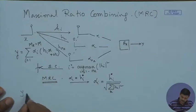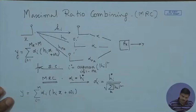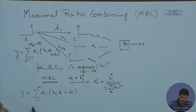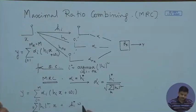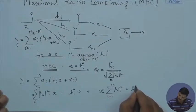The received signal Y equals the sum from i equals 1 to M of alpha_i H_i X plus W_i, where W_i is additive white Gaussian noise and H_i is the Rayleigh faded channel coefficient. Since alpha_i equals H_i conjugate, this becomes the sum of |H_i|² times X plus H_i conjugate times W_i, which can also be written as X times the sum from i equals 1 to M of |H_i|² plus H_i conjugate W.